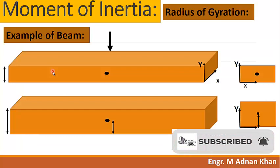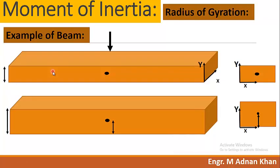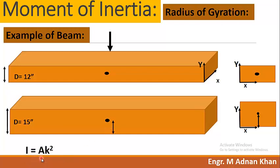Now I'll explain radius of gyration with two examples. First, consider two beams — one with a depth of 12 inches and another with a depth of 15 inches. Since I = Ak², as the depth increases, k (radius of gyration) increases. Since k is directly proportional to I, as k increases, the moment of inertia also increases, and moment of inertia is the measure of resistance against buckling.